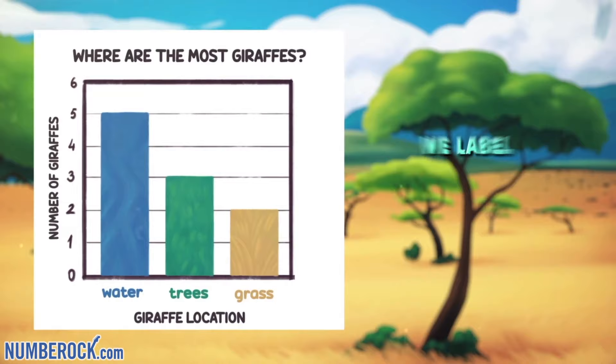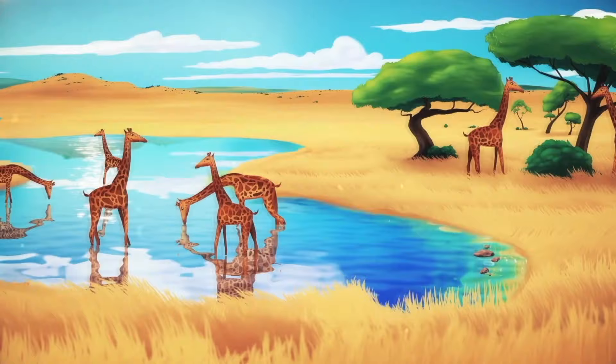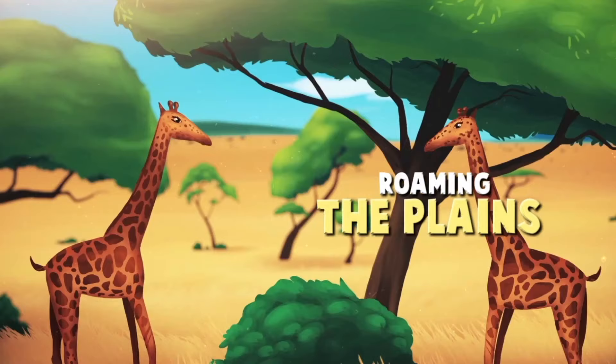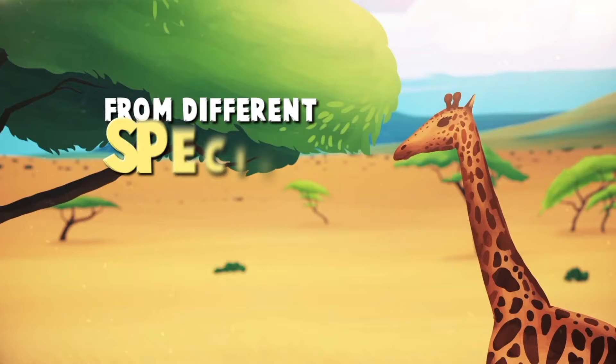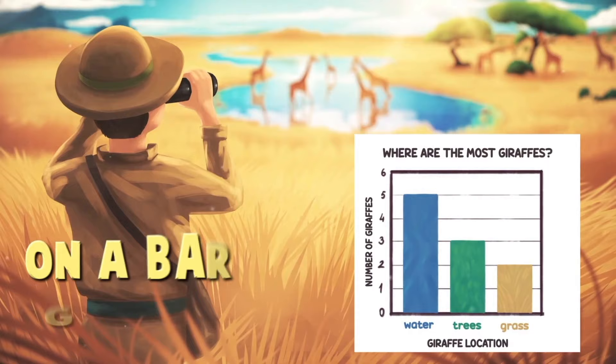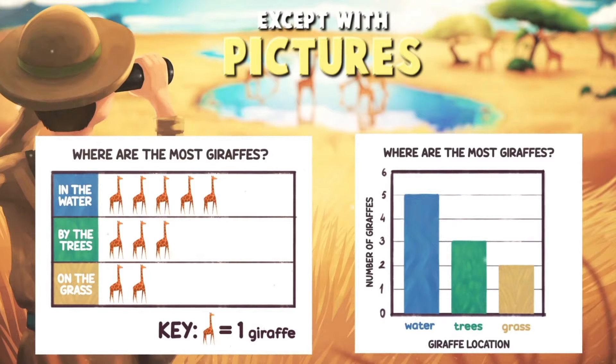It shows us that in all, 10 giraffes are standing tall on a warm summer day in Senegal, roaming the plains by calm seas, eating fruits, flowers, and leaves from different species of acacia trees. On a bar graph, the data there can be put together, taken apart, or compared. Picture graphs can show the same data you see, except for pictures and a key.